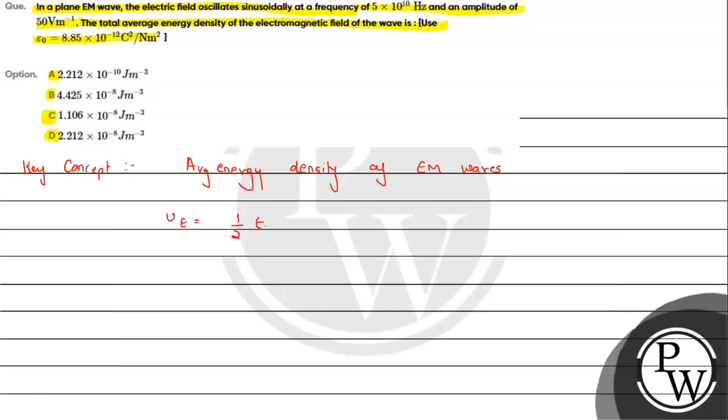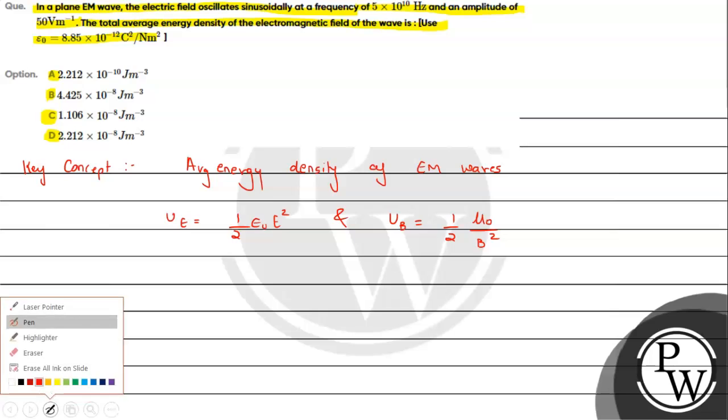And if we talk about average density of the magnetic field, it will be half of mu naught upon B squared. Here we can write that the values of E and B are the RMS values. So here we can write directly we can use the result to get the value of the total average density of the electromagnetic wave.